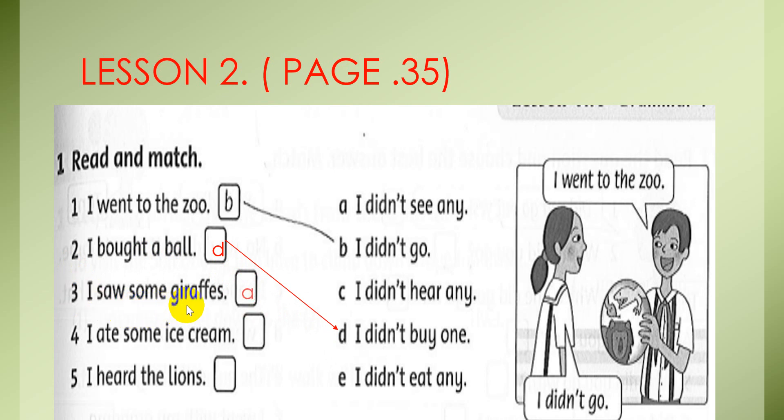How about number 3? Number 3, I saw some giraffes. I didn't see any. And now number 4, I ate some ice cream. And match E, I didn't eat any. The last, I heard the lions. I didn't hear any. Okay, very easy. You check again. Number 1, B. Number 2, D. Number 3, A. Number 4, E. And number 5, C.